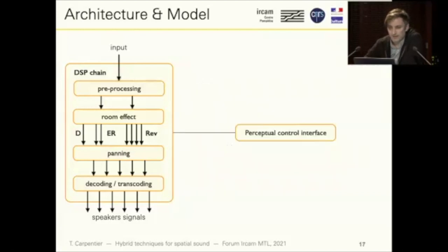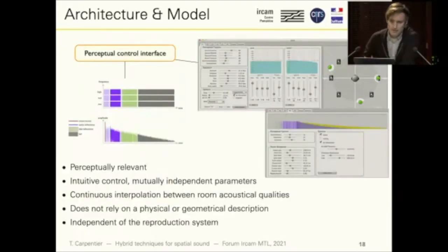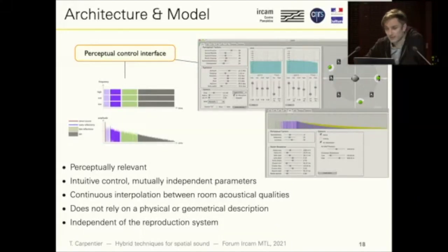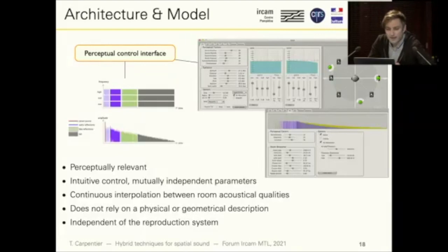All this signal processing chain is operated and controlled by one single control interface called the perceptual control interface. This interface has been derived from perceptual studies on the actual acoustics of rooms, typically concert halls and theaters, from which we derived a set of parameters that are meaningful from a perceptual point of view — cooking recipes to mix our 12 ingredients in a way that is relevant for sound artists. This approach allows continuously interpolating and navigating into the 12-dimensional space, interpolating between different room acoustic qualities.